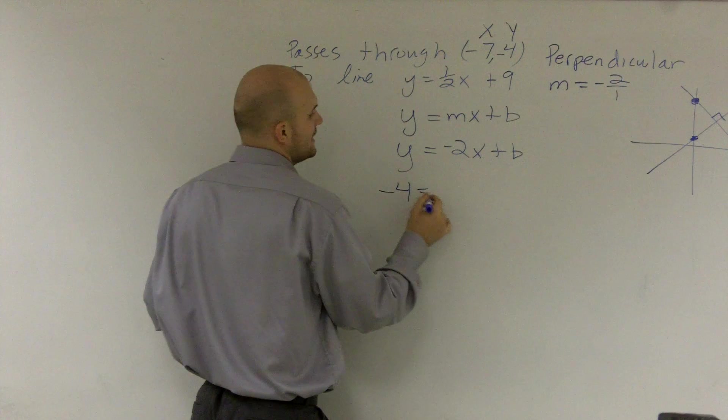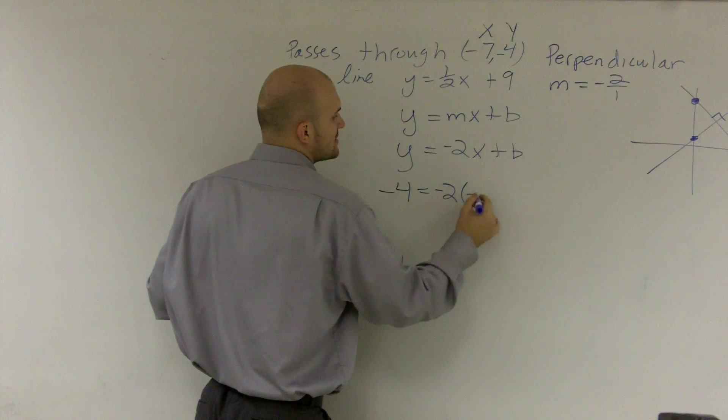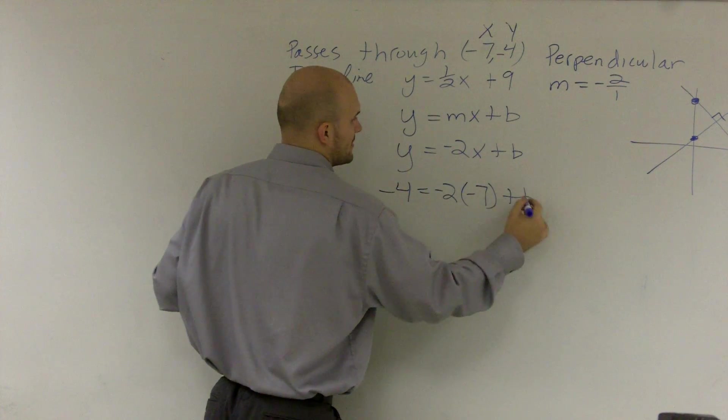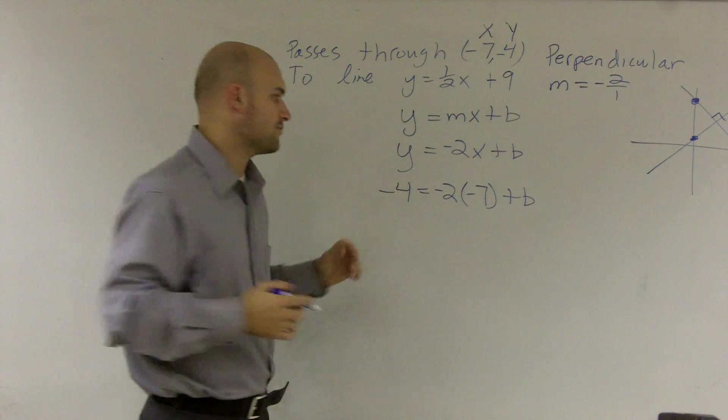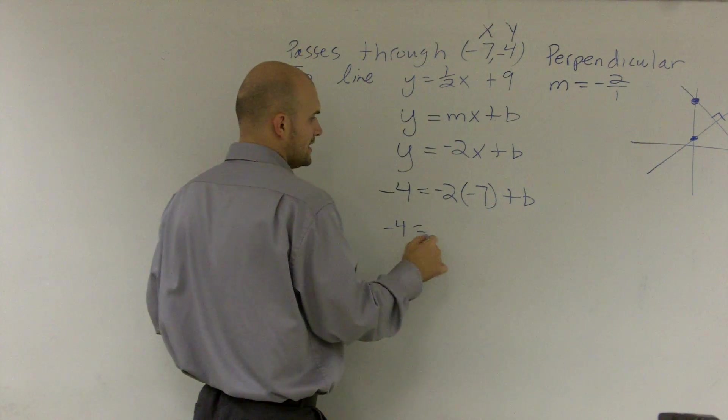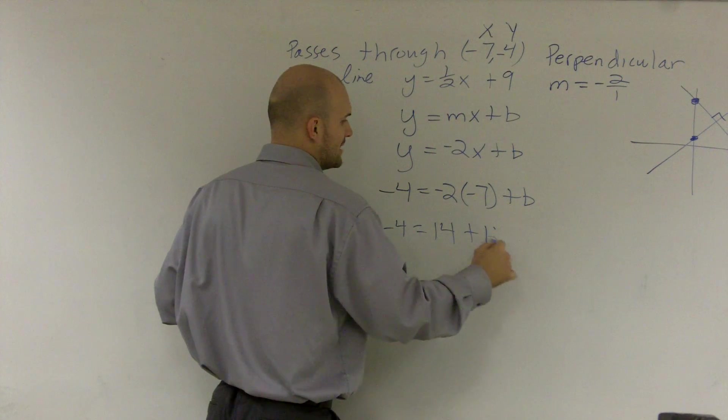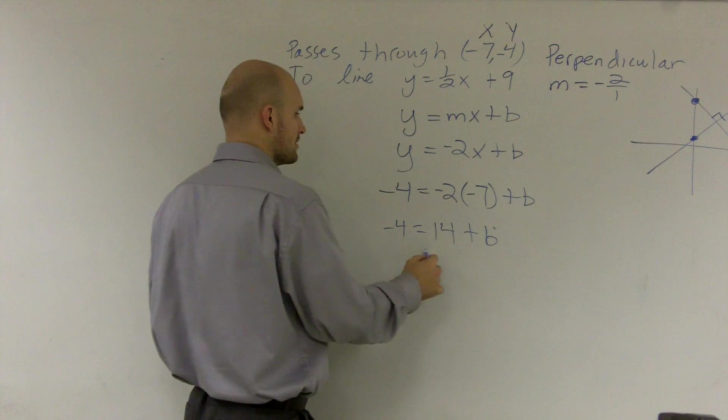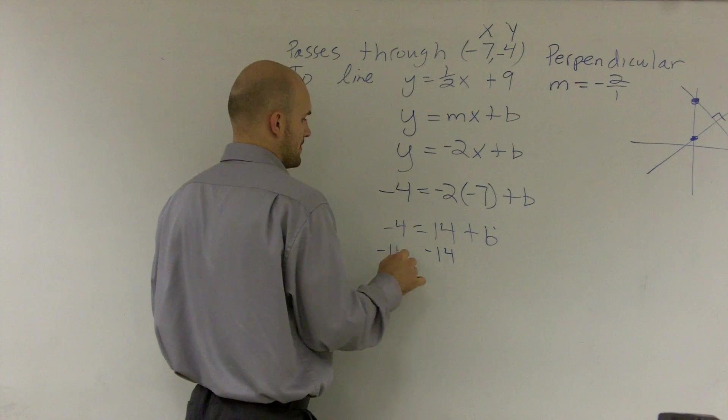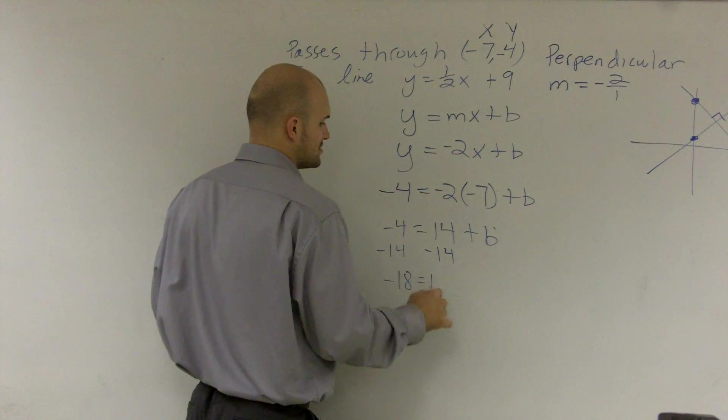So I get negative 4 equals negative 2 times negative 7 plus b. And then what I can do is now solve for b. So I get negative 4 equals positive 14 plus b. Subtract 14, and I get negative 18 equals b.